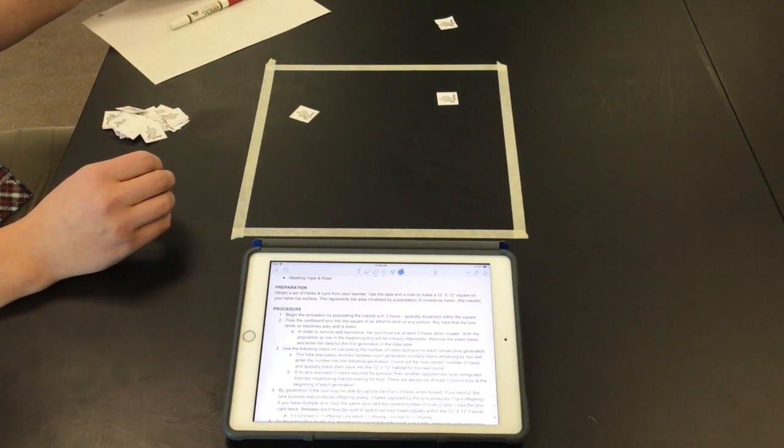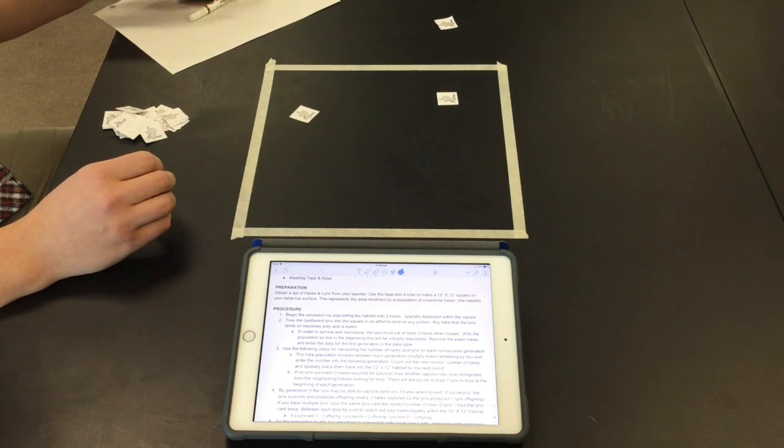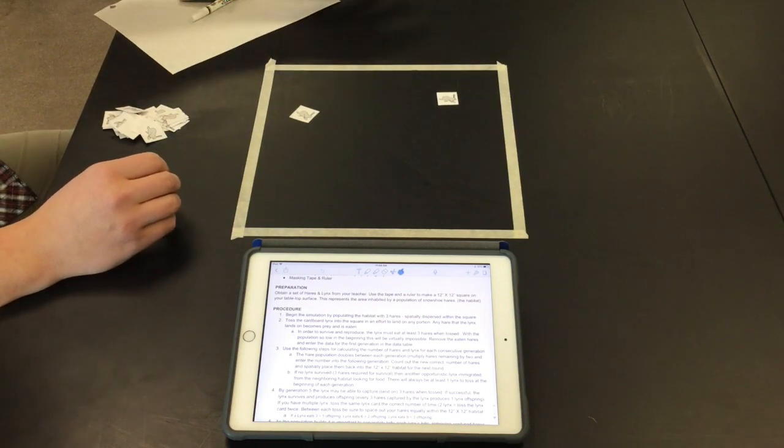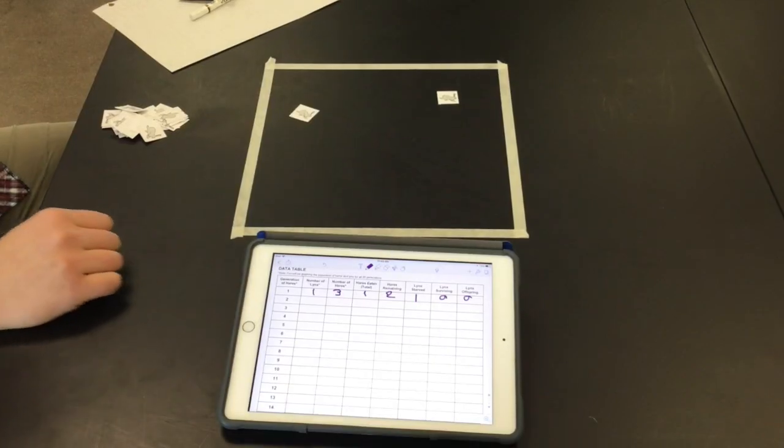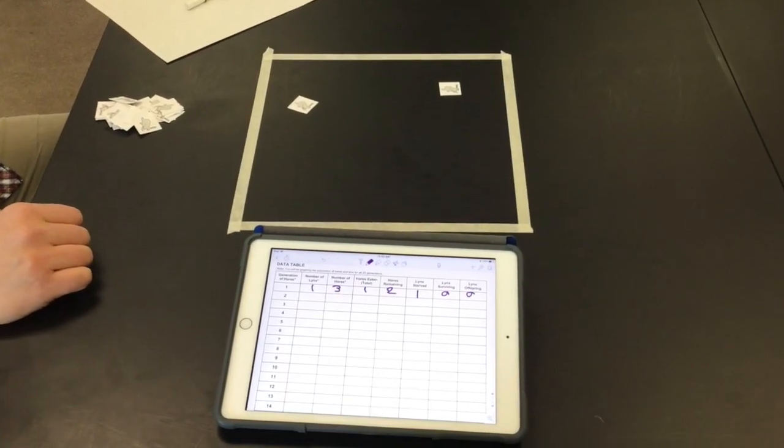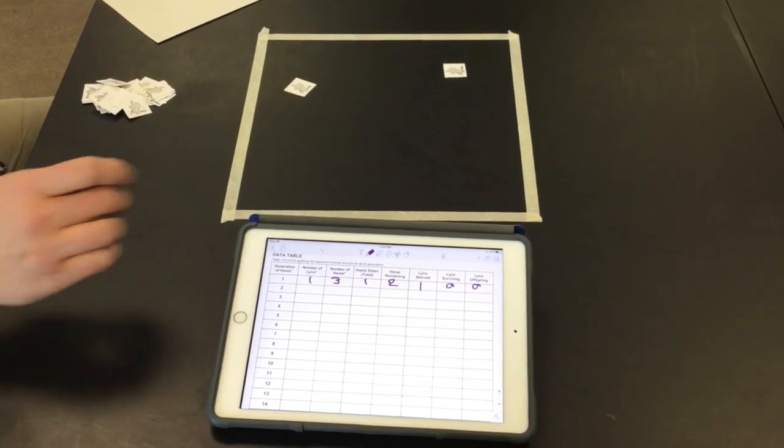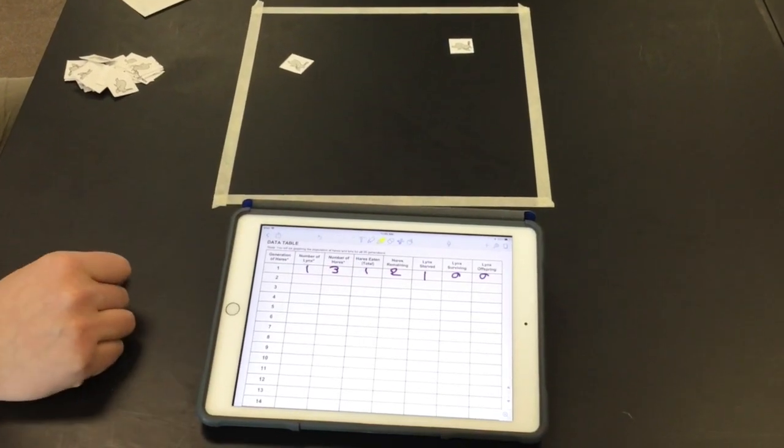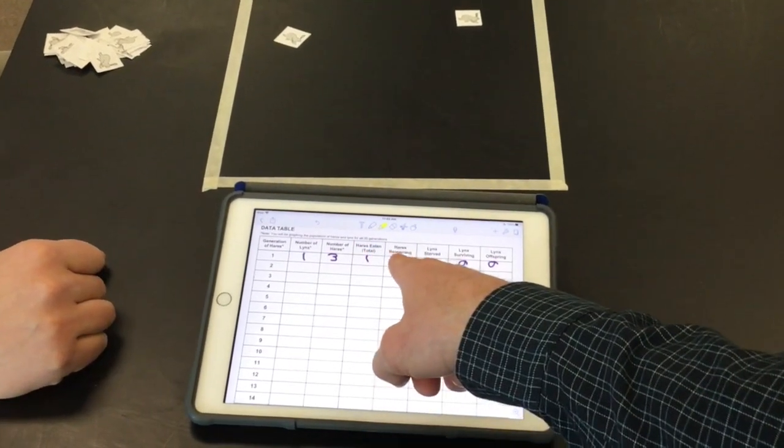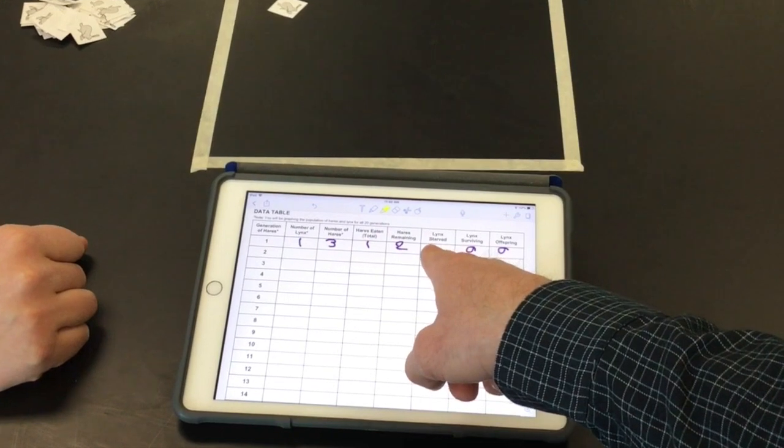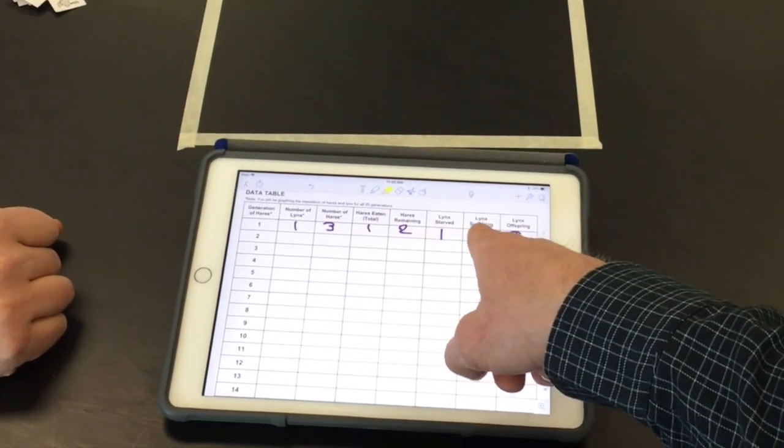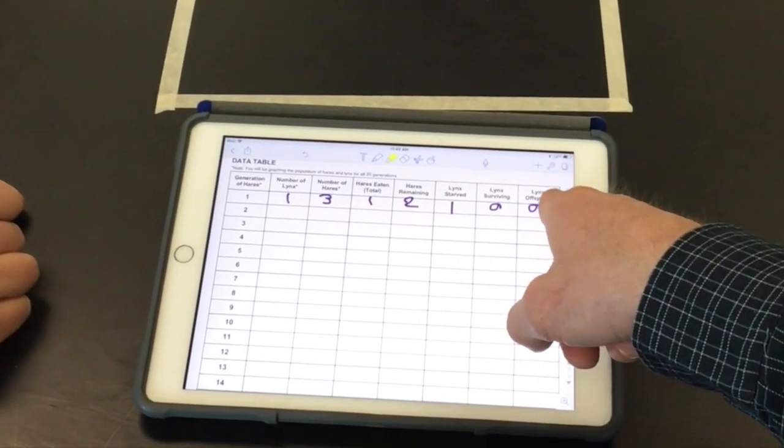So round one is over, we can record that data in the data table that the lynx ate one hair. And then so basically the number of lynx was one. We had one toss and then there were three hairs to begin with. Only one was eaten so two remained. The lynx starved because it didn't eat three. So there's zero lynx that survive and therefore there's no lynx offspring.